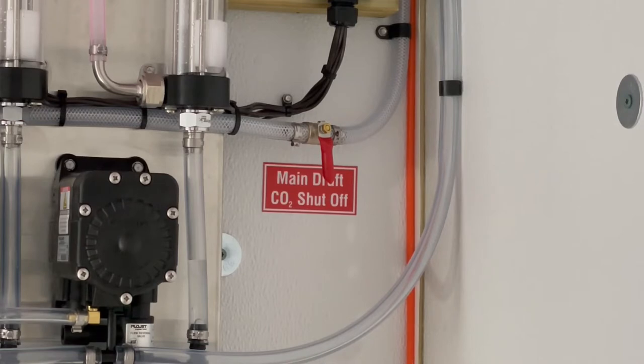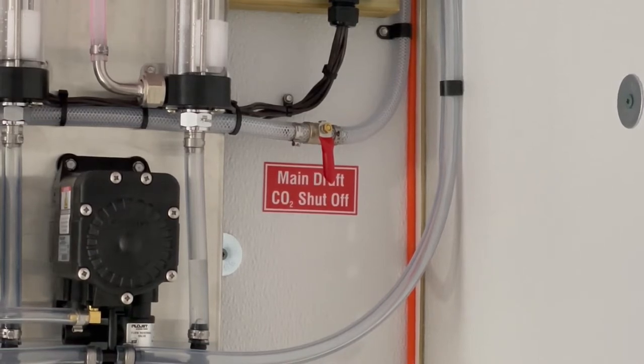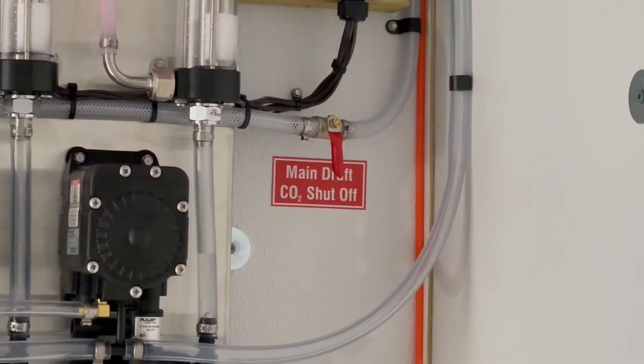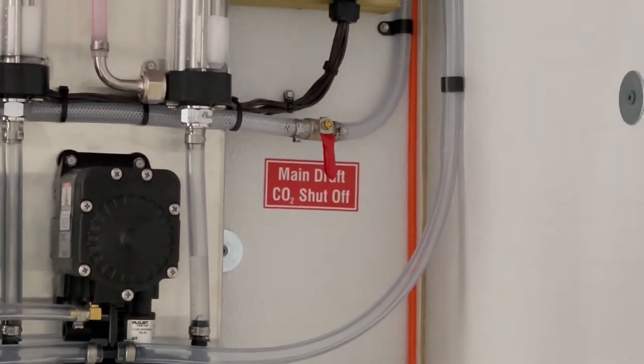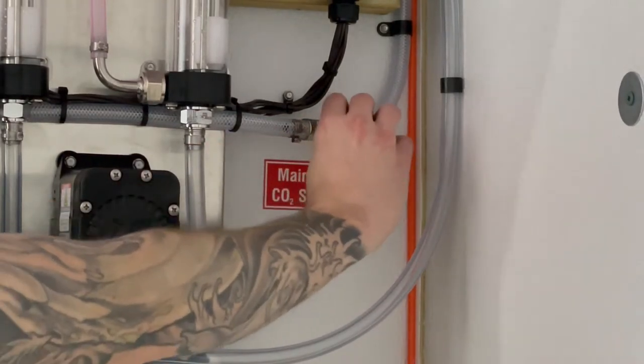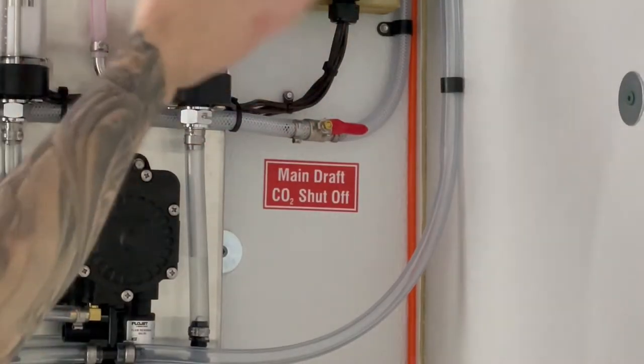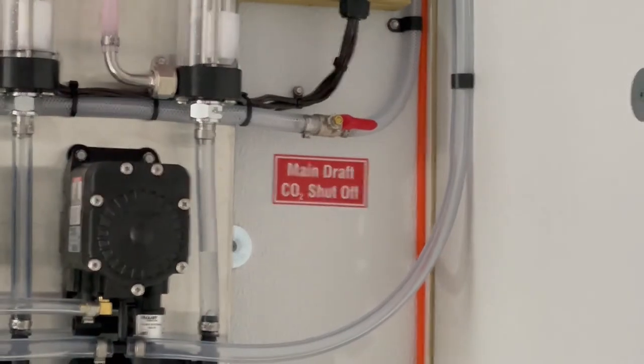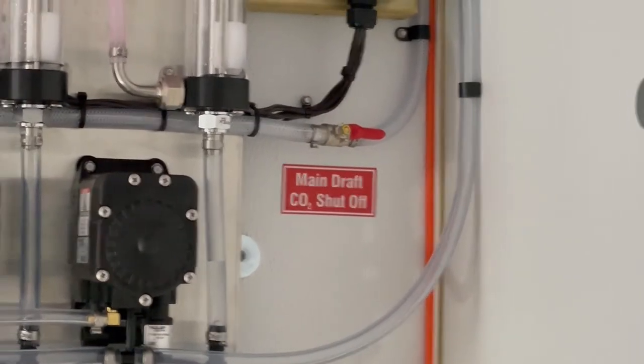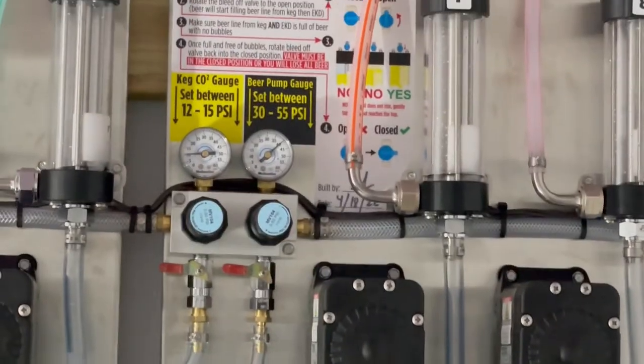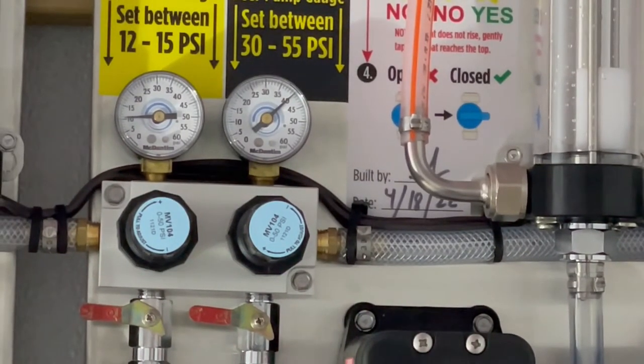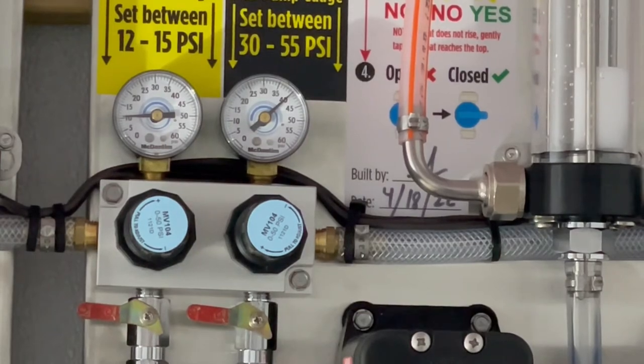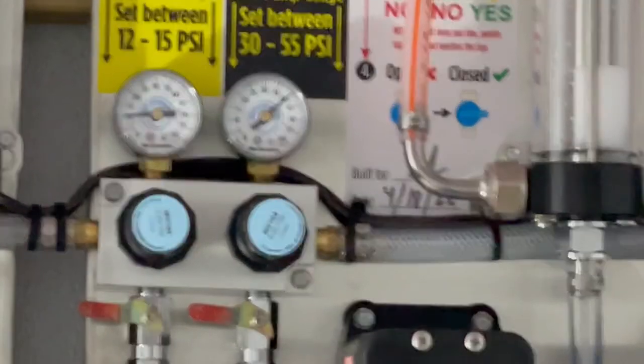First thing you're going to want to look for is your main draft CO2 shutoff valve. That's this red guy right here in the center. Make sure that your bulk CO2 tank is on and ready to go. Then you're just going to push that so that it is falling lines. Normally there is a hiss that can kind of follow if your tank's already on. You can check to see if your regulators on the panel move up to our pre-set levels.